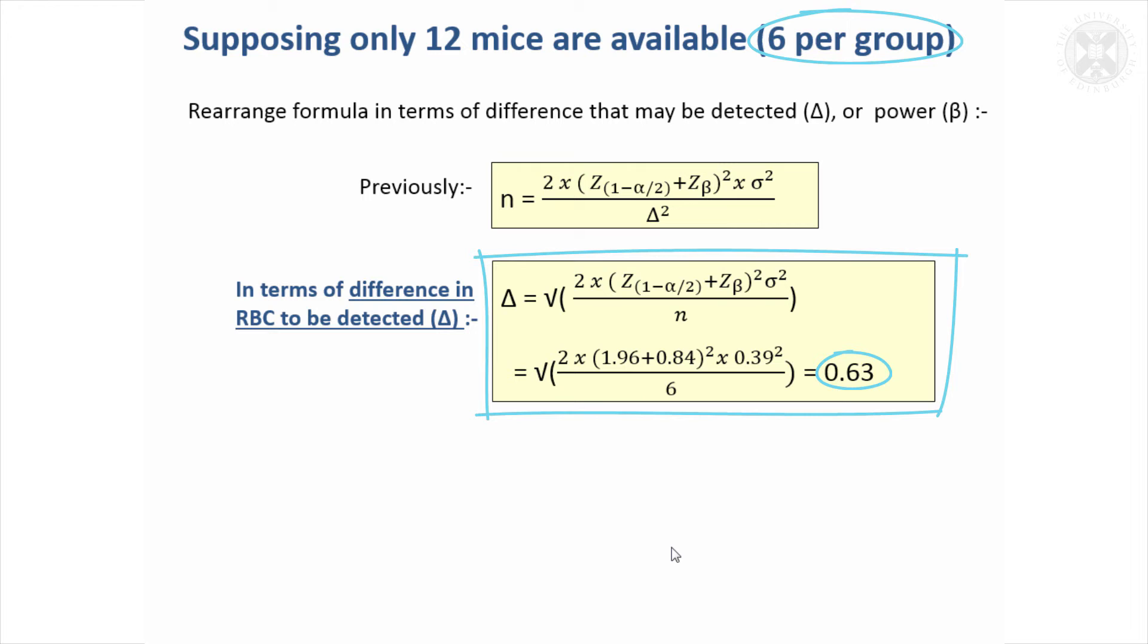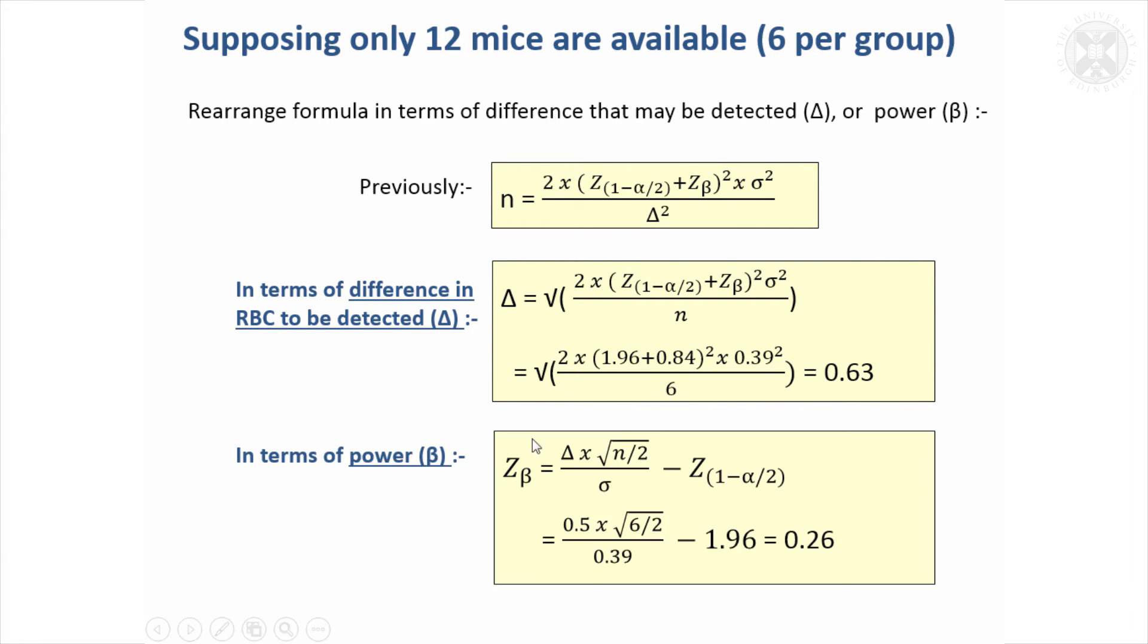We might want to think about is that study still worthwhile. We can detect a bigger difference but we can't detect a difference of the size we originally hoped to. The other way around we could do it is we could say we've got six mice per group, we'll assume we still want to detect a difference of 0.5, but how much power have we got to do that? By turning this around, we can get the value of Z that would be appropriate to that size of study and that difference.